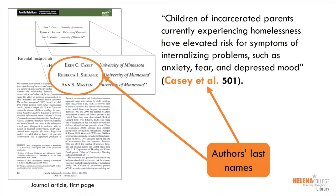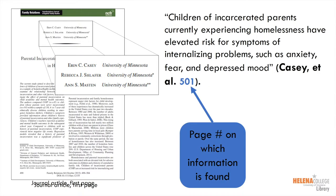Here's a direct quote from an article. The citation appears in parentheses at the end of the sentence, after the closing quotation mark and before the period. The first part of the in-text citation is the author's last names — find them near the title of the article. For three authors, list the first name followed by et al., which is Latin for 'and others.' Next, give the page number on which the information or quote is found.